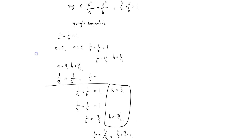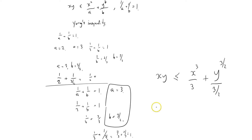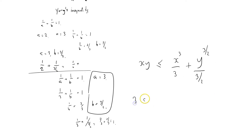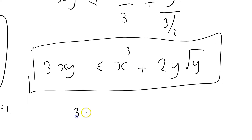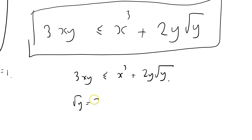Now I'll write down Young's Inequality with these values. That says x·y ≤ x³/3 + y^(3/2) / (3/2). Multiplying through by 3, we get: 3xy ≤ x³ + 2y√y. So 3xy ≤ x³ + 2y√y.